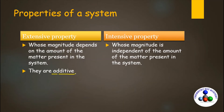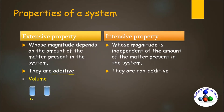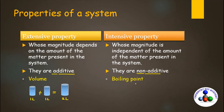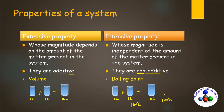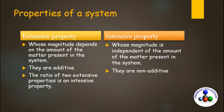Extensive properties are additive — you can add them. For example, volume: if I take two glasses of water each with one liter, and add them, you get two liters. But intensive properties are not additive. For example, one liter of water has a boiling point of 100°C and two liters also has a boiling point of 100°C — you cannot add boiling points. Also, if you take the ratio of two extensive properties, the result is an intensive property. For example, density equals mass divided by volume — mass and volume are both extensive, but their ratio, density, is an intensive property.